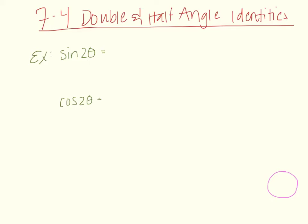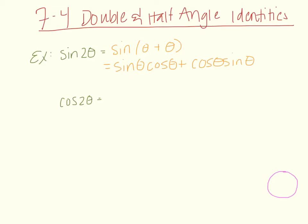These come from using our angle addition sum and difference formulas. For example, sine of two theta — that's the sine of twice an angle — is the same as sine of theta plus theta. Using the angle sum formula, we get sine theta cosine theta plus cosine theta sine theta, and since those terms are equal, we get two sine theta cosine theta.